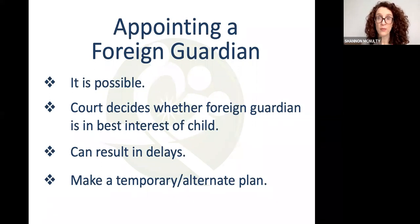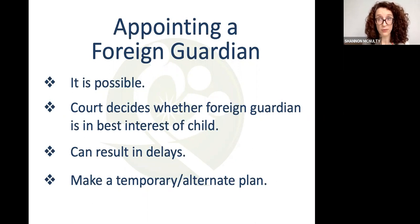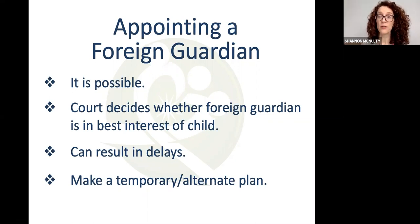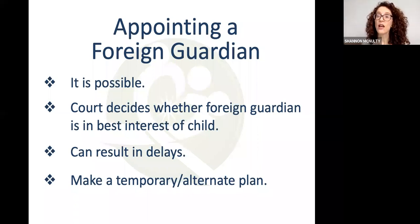The guardian would request an investigation, the agency would determine whether the home is suitable and safe for the child, and then report back to the U.S. court. In most cases — if it's a close relative, named in the will, and the report comes back positively — the court will go ahead and appoint the foreign guardian.